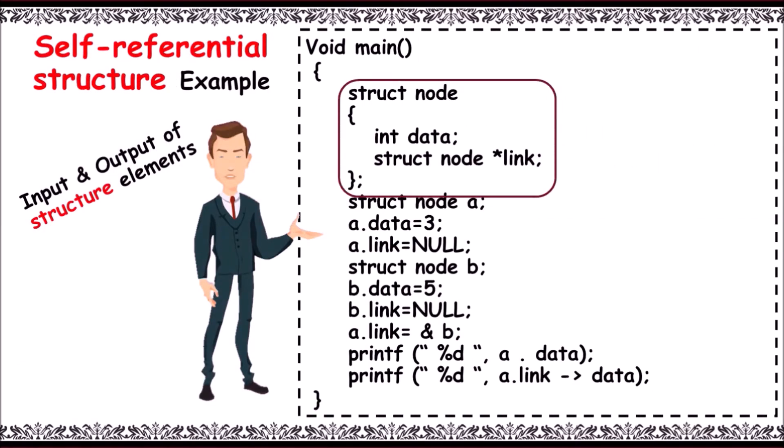Struct node with two fields: data and link. Then struct node a: a.data equals 3 and null is assigned to a.link. Then node b is declared: b.data equals 5, null assigned to b.link.